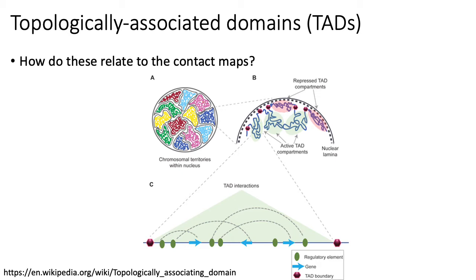TADs are typically sub-segments of a chromosome where you see a lot of physical interactions within the TAD, but not so much between TADs. The idea of a TAD is that these regions are bounded by certain types of regulatory elements like CTCF binding sites.